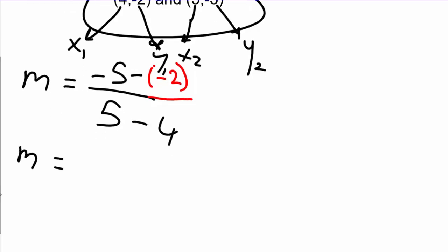Let's calculate: what is -5 minus -2? That's -5 + 2 = -3. Then -3 divided by 1, which is -3. So now we know the slope. This is how you find out the slope and y-intercept.